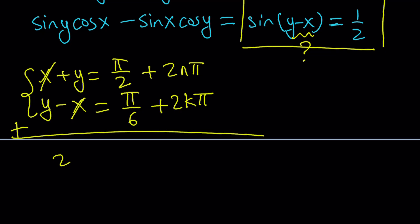And x is going to cancel out. But we're going to end up with 2y equals 3 pi over 6 plus pi over 6, which is 4 pi over 6. I can definitely write it as 2 pi over 3. And then plus 2 times n plus k pi. Obviously, n plus k is another integer, but you have to be careful because n plus k depends on the choice of n and k.